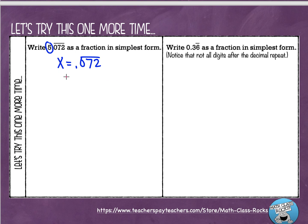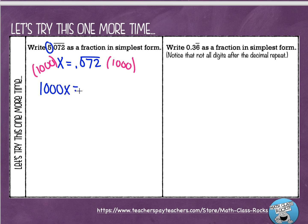The next step is I have to multiply each side by 10 to the d power, and d is the number of digits that are repeating. I have three numbers repeating, which means I would multiply each side by 10 to the third power, or 1,000. So 1,000 times x is 1,000x. And if I multiply this number by 1,000, I'm moving my decimal point over three times, and I'm going to end up with 72. And if I keep going, since this is repeating, it would be 0.072 again — because this is 0.072, 0.072, 0.072.